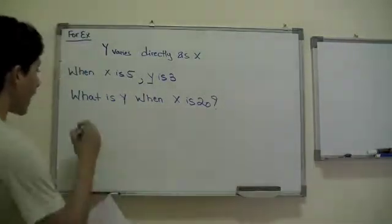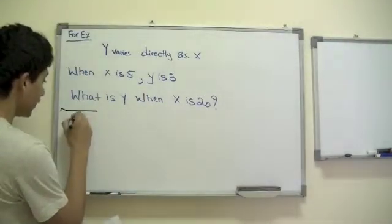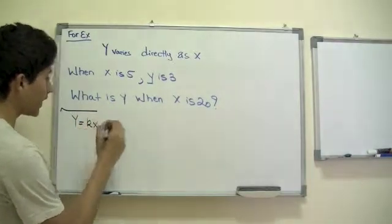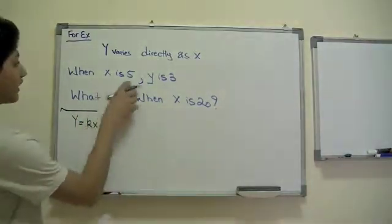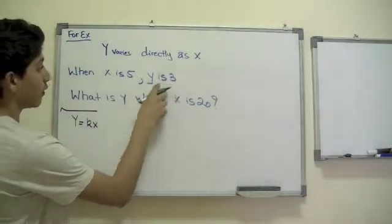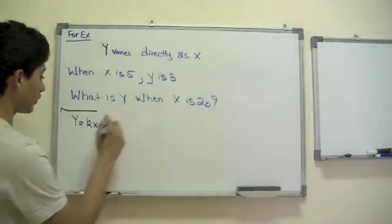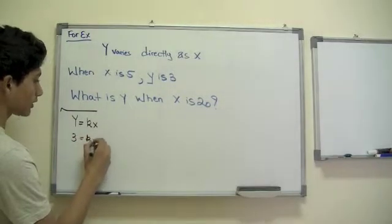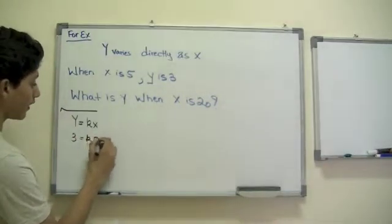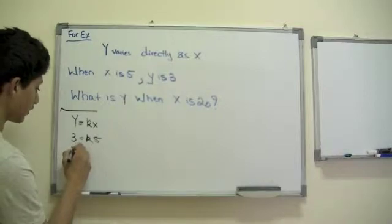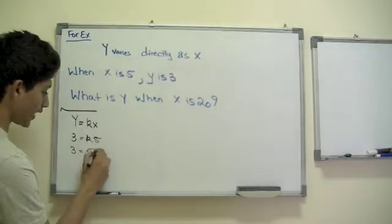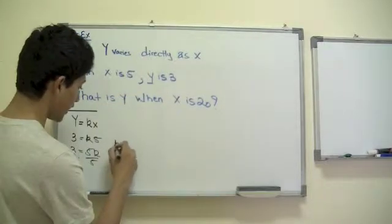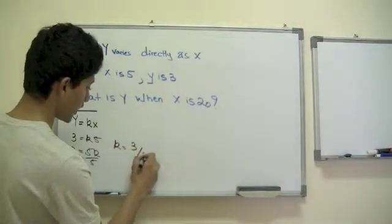We use the formula y = kx. It tells us that when x = 5, y = 3. So 3 = k times 5. Dividing both sides by 5, we find k = 3/5.